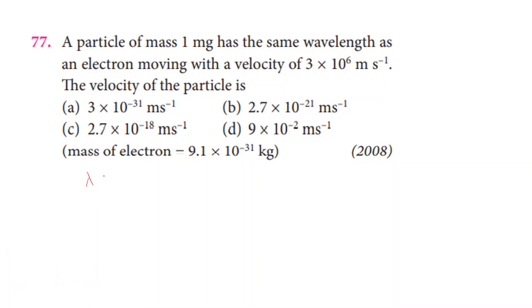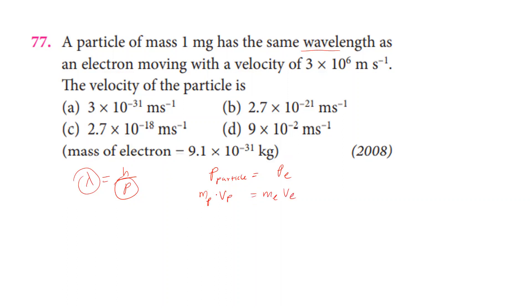The de Broglie wavelength is h divided by momentum. Since both particles have the same wavelength, the momentum of the particle must equal the momentum of the electron. Therefore, mass of the particle times velocity of the particle equals mass of the electron times velocity of the electron. The mass of the particle is 1 milligram.